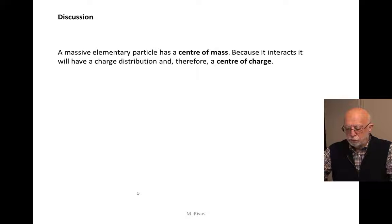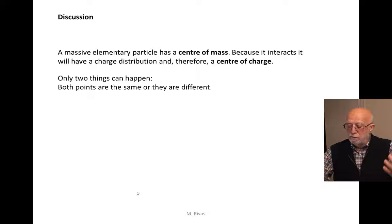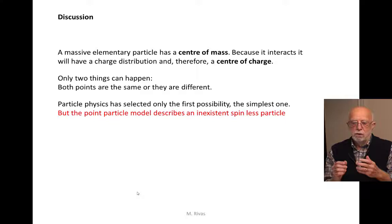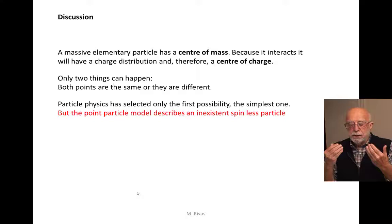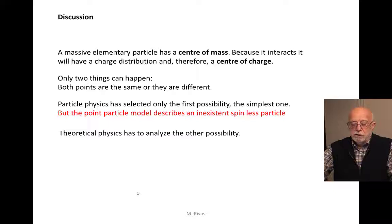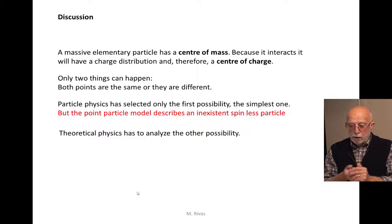Only two things can happen: either both points are the same or they are different. Unfortunately, particle physics has selected the first option — the simplest one, the point particle — but the point particle model describes non-existent spinless particles. Therefore particle physics has to understand what happens if we have an object with two centers. We have to analyze this second possibility.